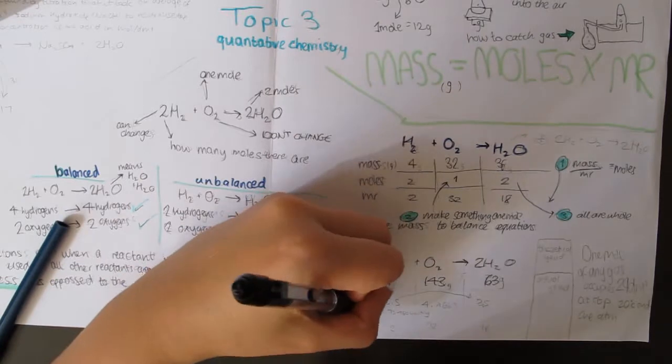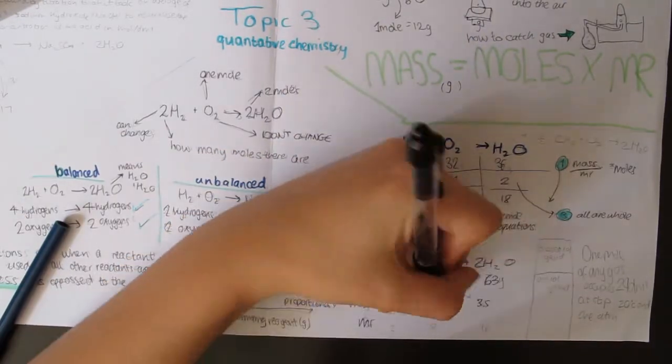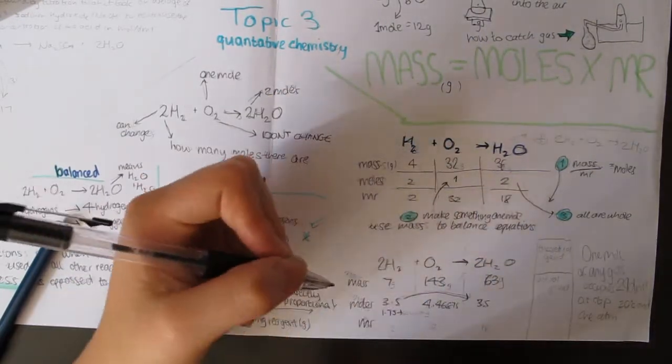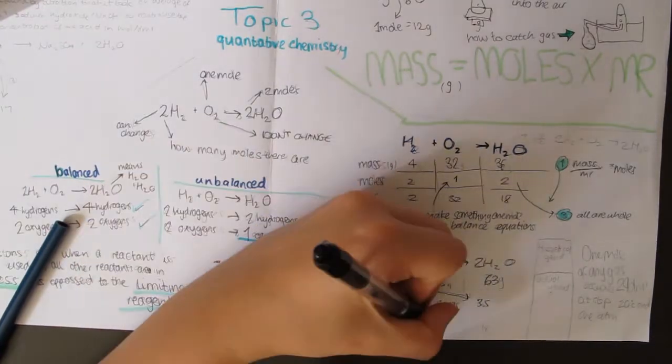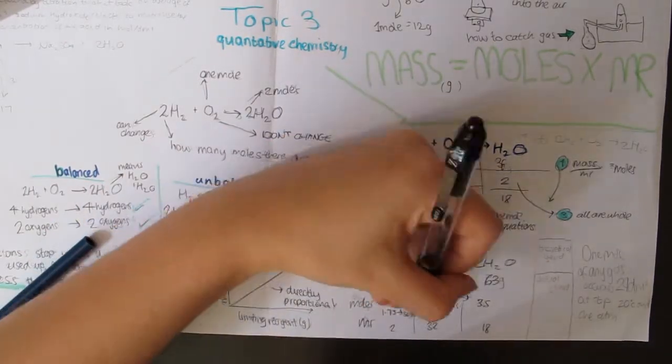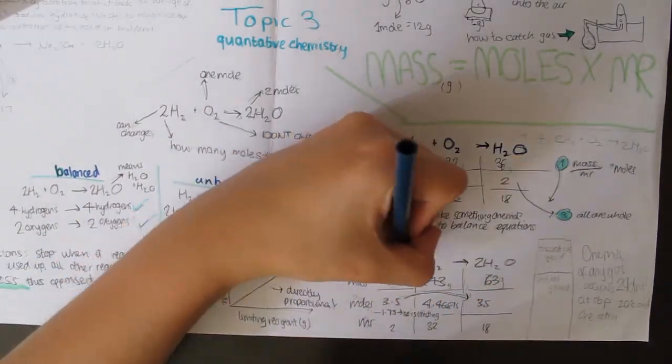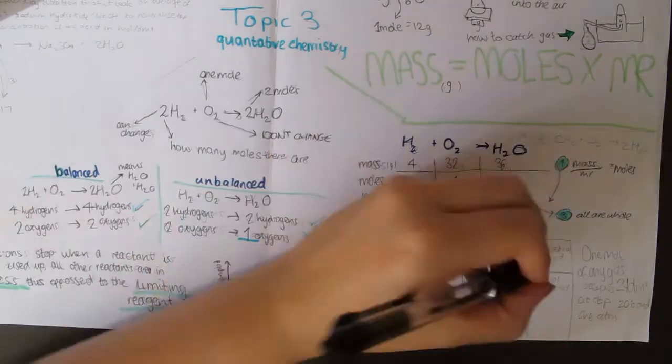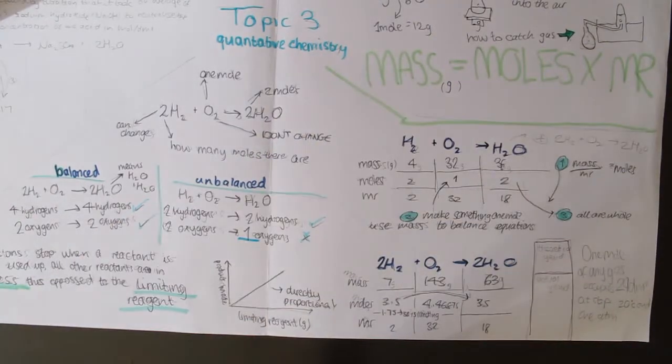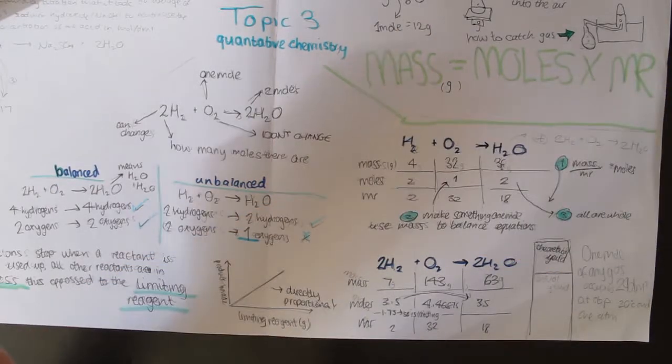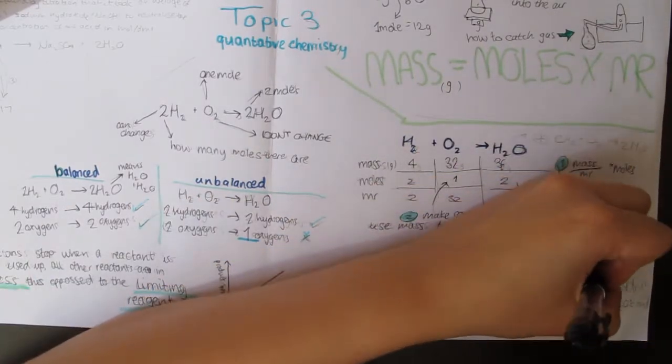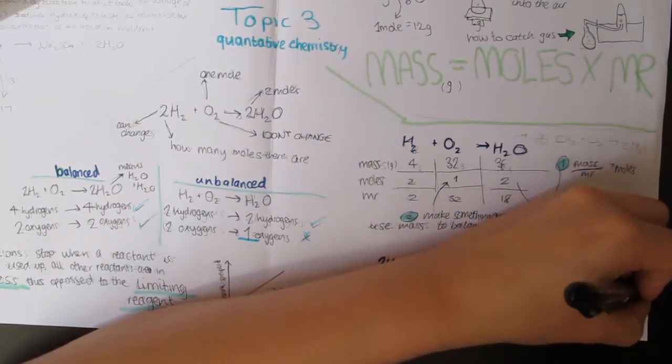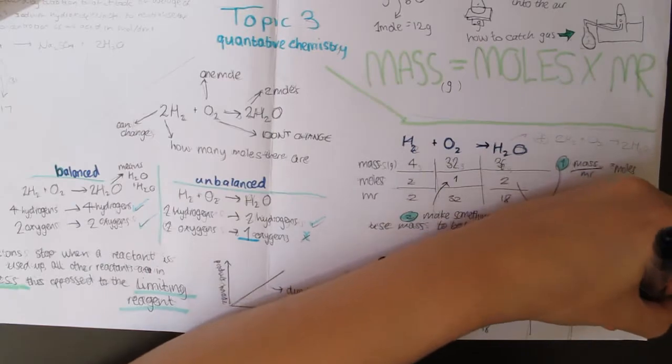You should be able to use the mass moles and MR formula in lots of different ways, using the rules above. But remember, the masses you work out are called the theoretical yield, and the actual yield will almost never be achieved, so will be less. Another important rule to note is that one mole of any gas occupies 24 decimetres cubed at room temperature, which is 20 degrees, and pressure, 1 atm. This is shortened to RTP.